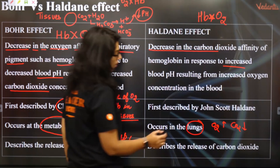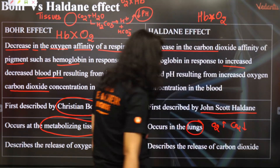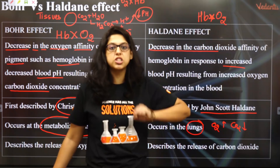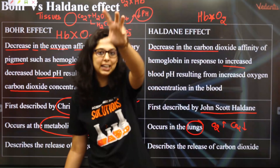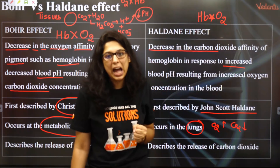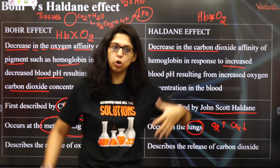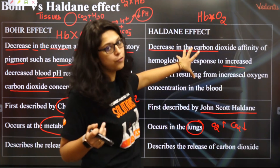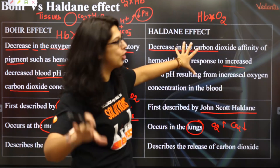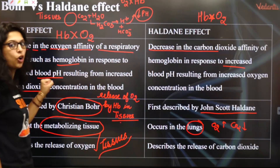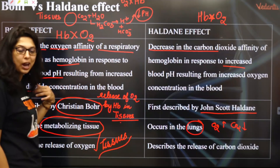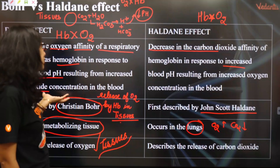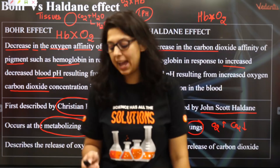The Haldane effect was discovered by scientist John Scott Haldane. It describes the release of CO2 — CO2 is exhaled out — and O2 is grabbed by hemoglobin and taken to the tissues. So: grabbing of oxygen and leaving of CO2 is the Haldane effect; leaving of oxygen and grabbing of CO2 is the Bohr effect.